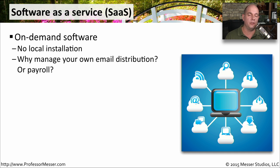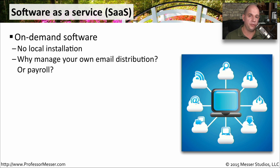It may be a third party that we have contracted with, and we're going to use the software that's running in their environment instead. A good example of Software as a Service is email distribution. Maybe you're sending out an email newsletter every week, and instead of having your own email servers and software to manage that distribution process, you're using a third party provider — the software and the service running somewhere else in the cloud — and you're simply using that to send your email newsletters.